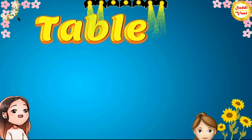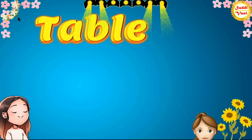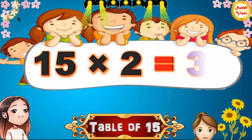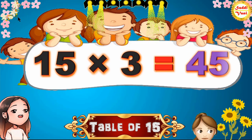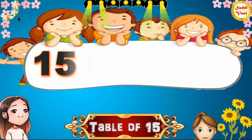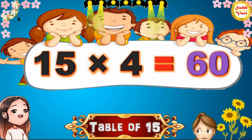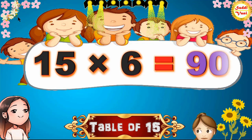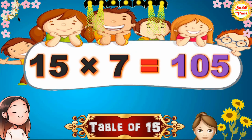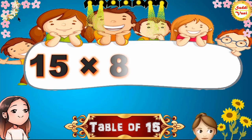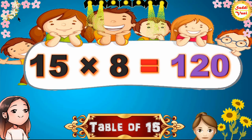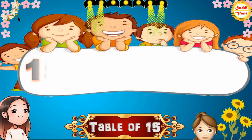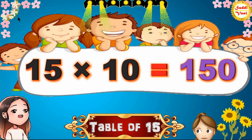Hello children, we will learn table of 15. 15×1=15, 15×2=30, 15×3=45, 15×4=60, 15×5=75, 15×6=90, 15×7=105, 15×8=120, 15×9=135, 15×10=150.